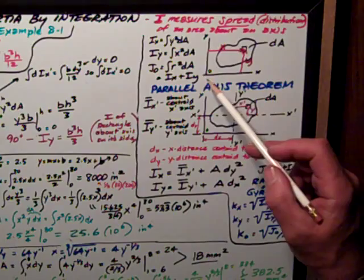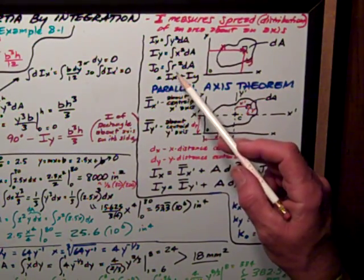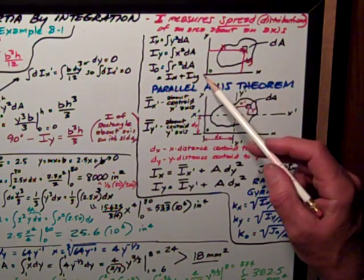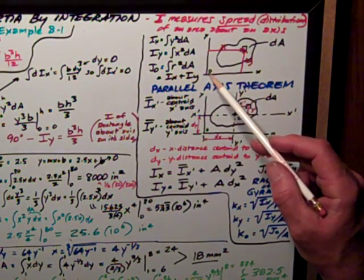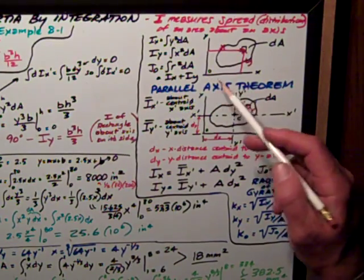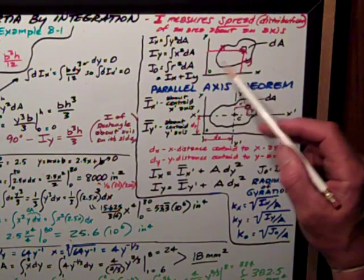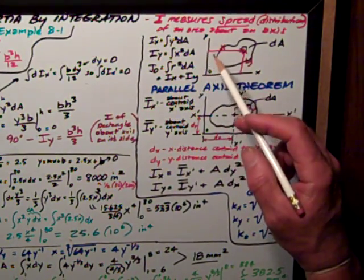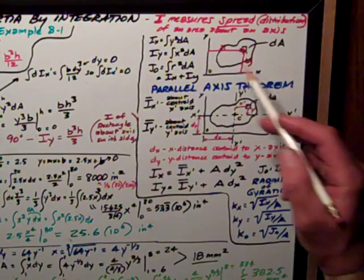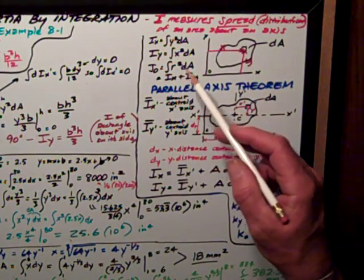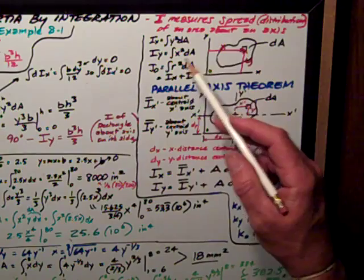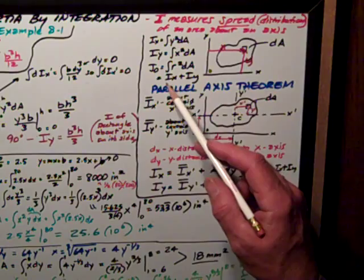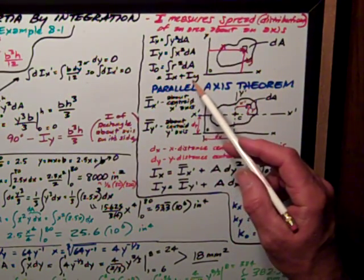There's another one, a third one, called the polar moment of inertia, which is the integral of r squared. r is the distance from the origin to the little area. So r squared is really equal to x squared plus y squared. We can simplify that down, say the polar moment of inertia, J-o, is equal to Ix plus Iy.